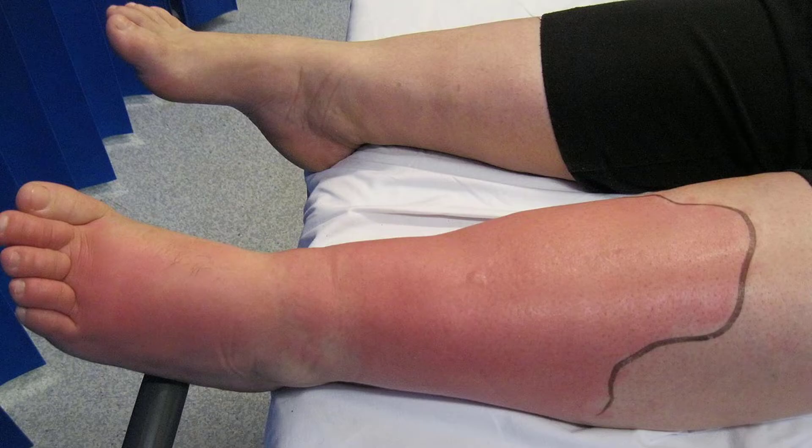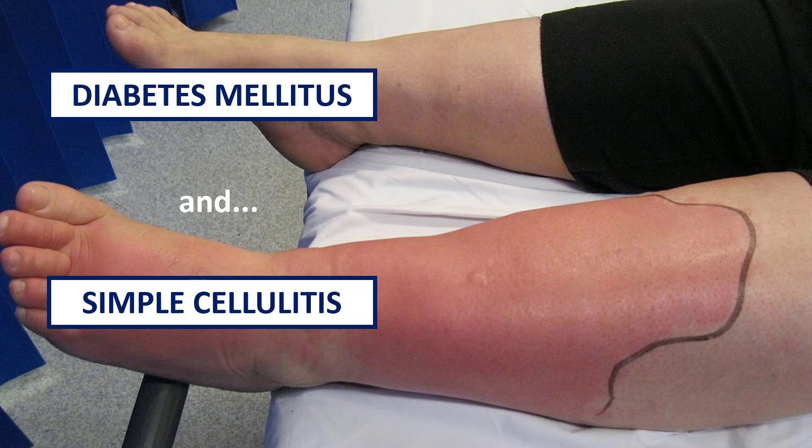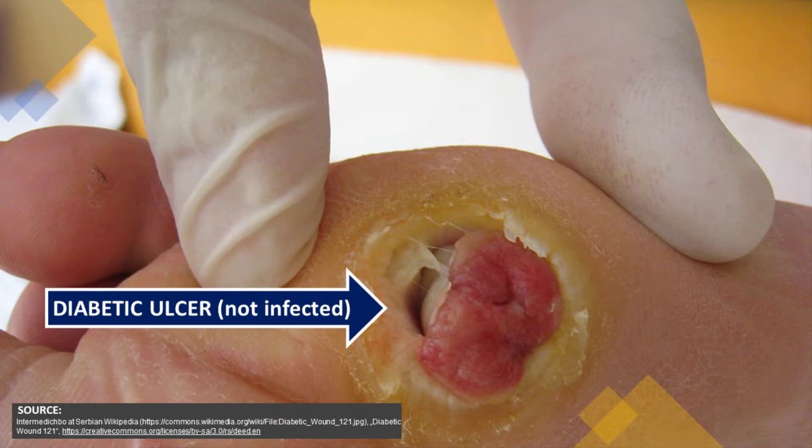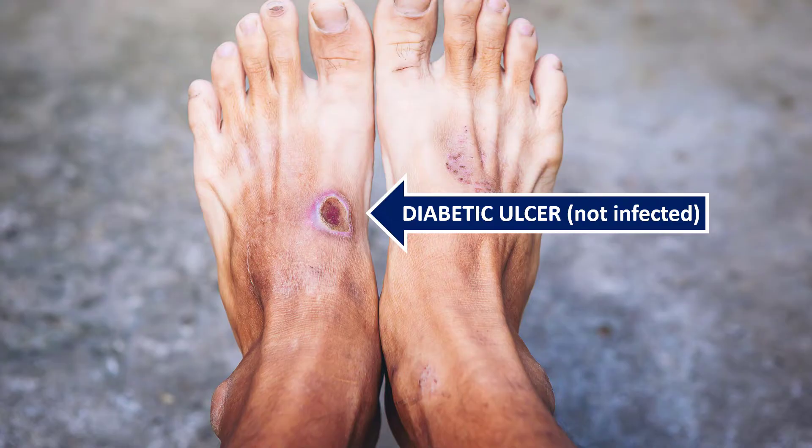Tip number one. Just because your patient has diabetes and they have cellulitis — a skin infection on their foot — this doesn't make it a diabetic foot infection. For us to diagnose a diabetic foot, there has to be tissue damage as a consequence of uncontrolled diabetes mellitus. Usually this tissue damage appears in the form of an ulcer, so there has to be an ulcer or necrotic tissue. This is diabetic foot. If it's infected, this is a diabetic foot infection.